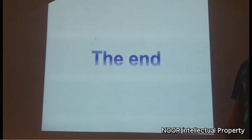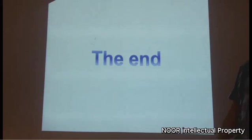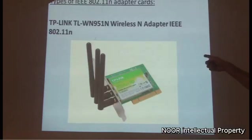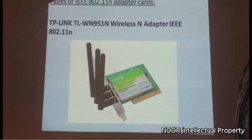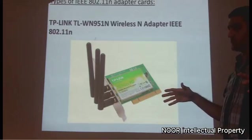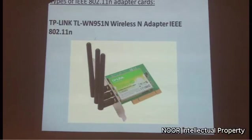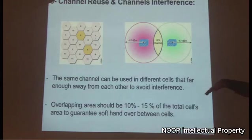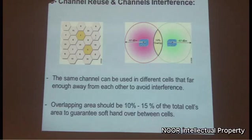During the Q&A, a question was asked about the minimum overlap between two cell coverage areas. The answer is that the standard overlap range is 10% to 15% for typical designs. If voice-over-IP clients are present on the network, the overlap should be increased to 20% to ensure seamless handover.